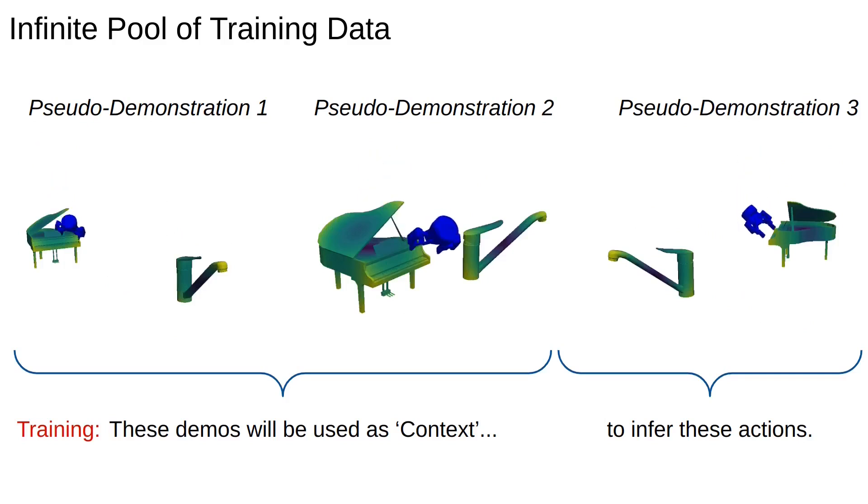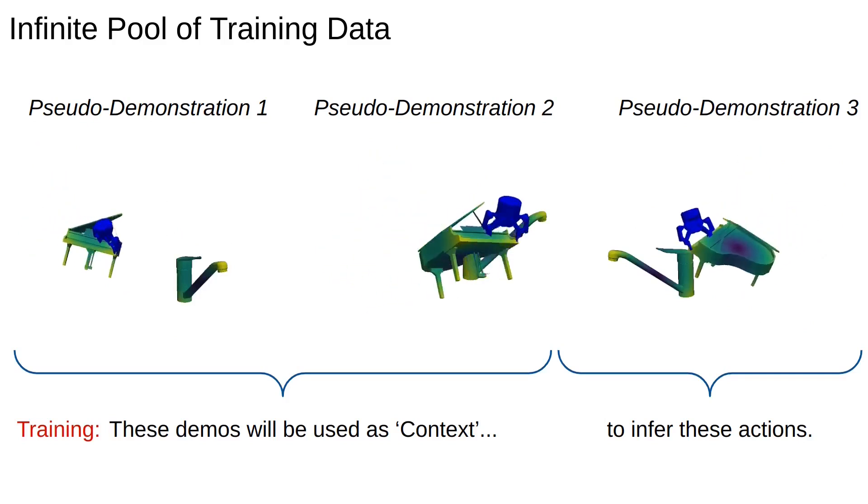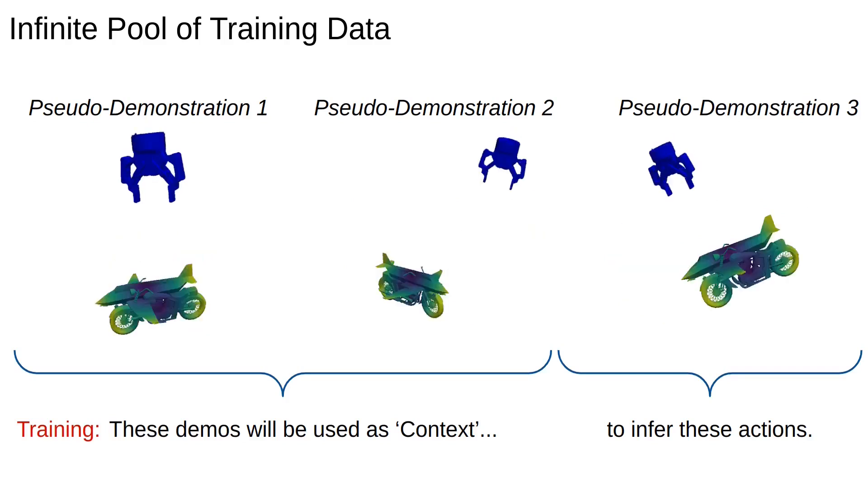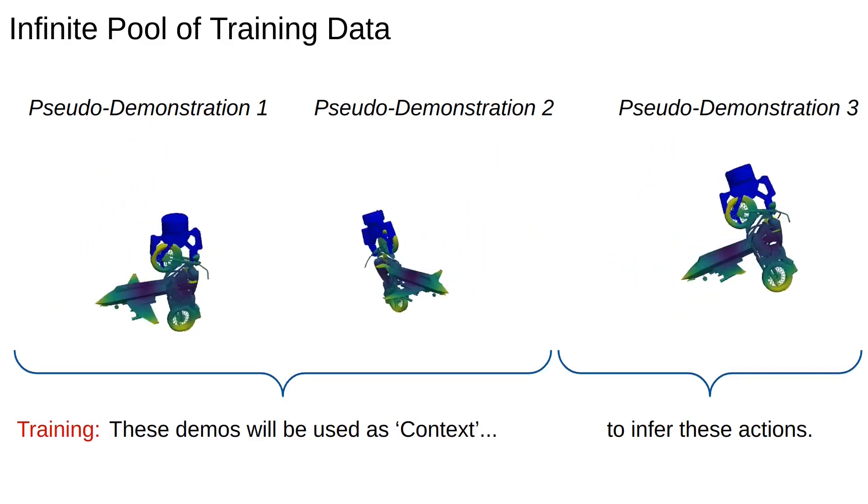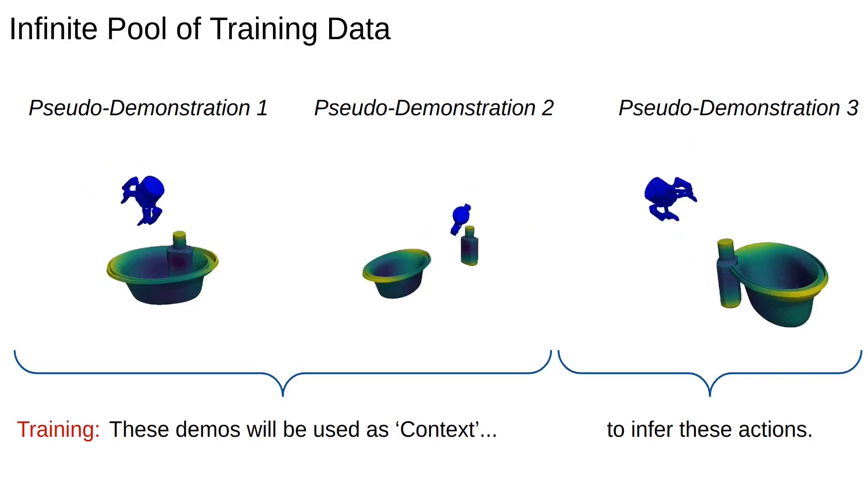As our training data, we use what we call pseudo-demonstrations. These are procedurally generated trajectories in simulation, where each set of trajectories, even though different, semantically perform the same type of movements relative to the objects in the scene.